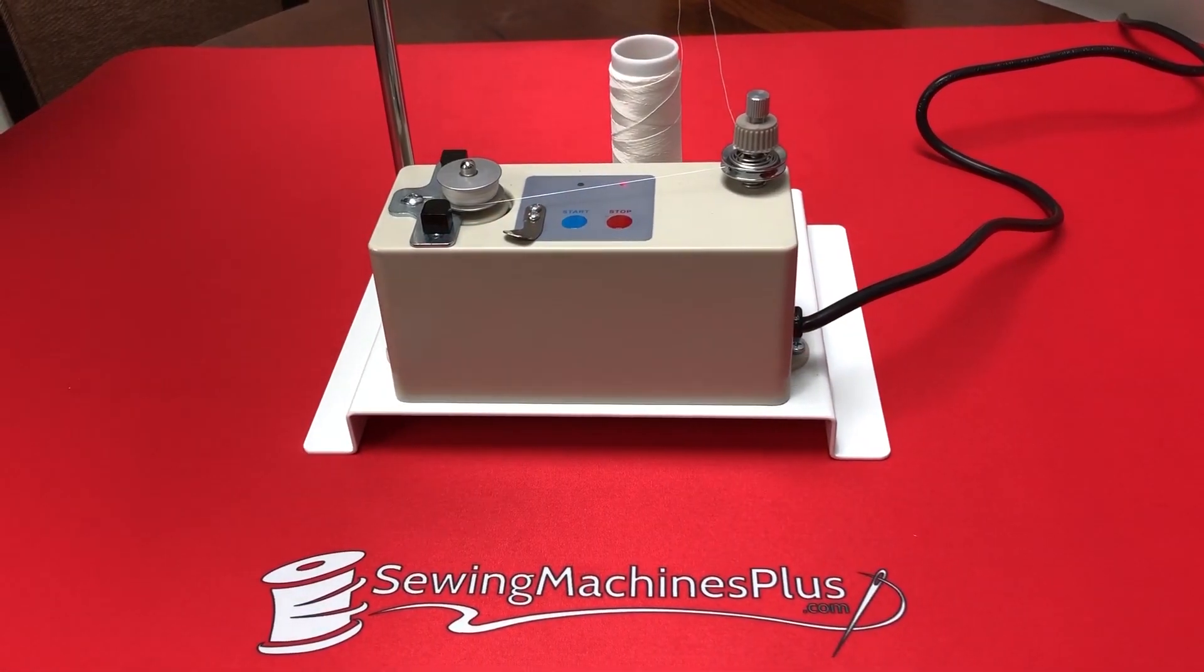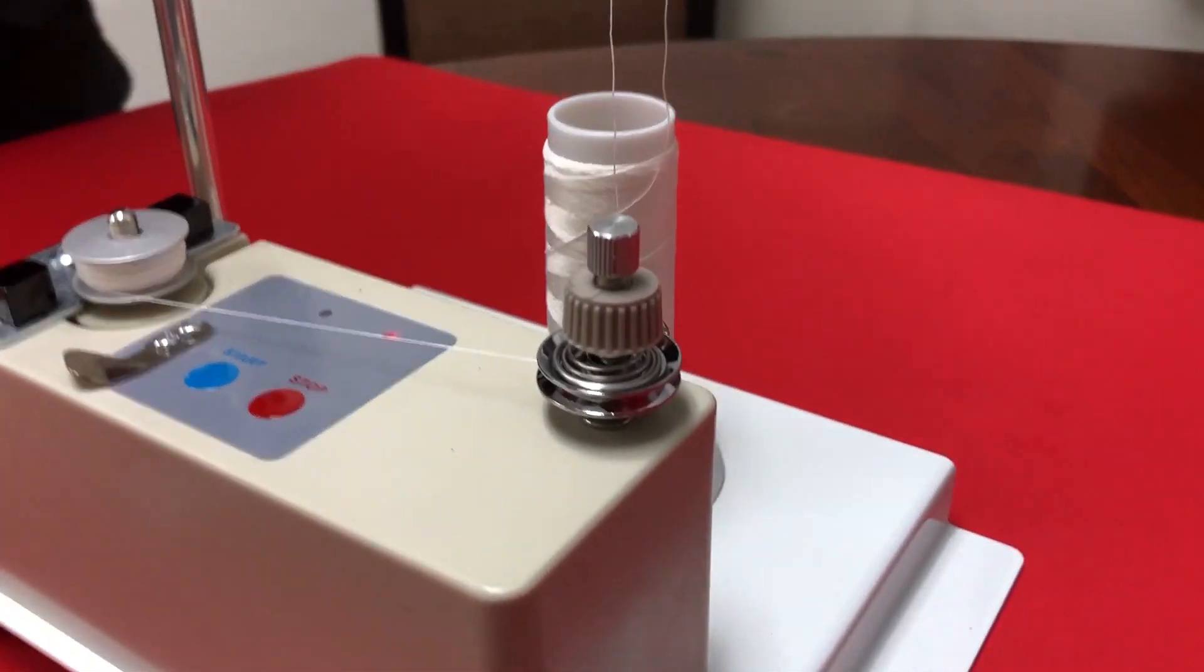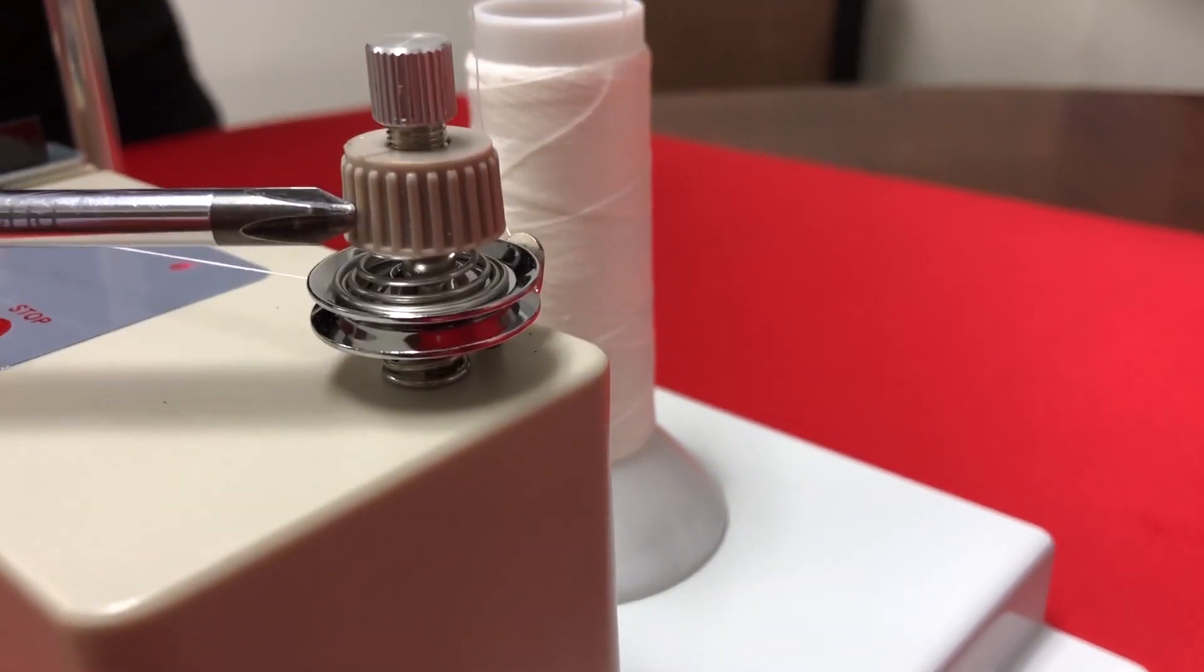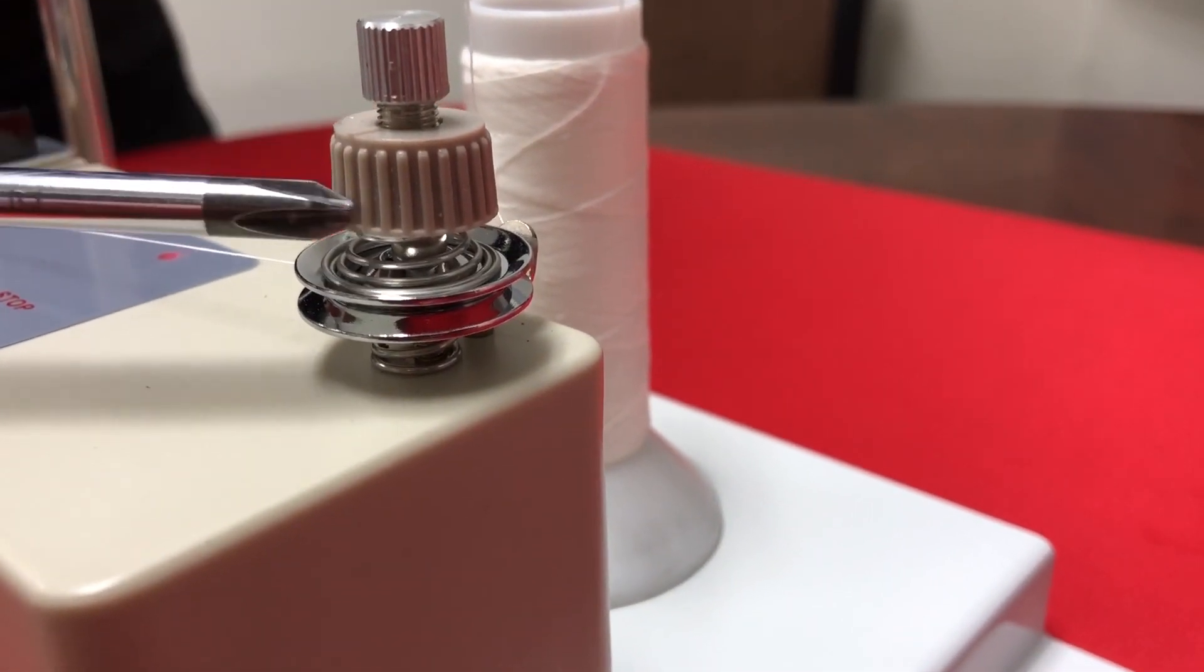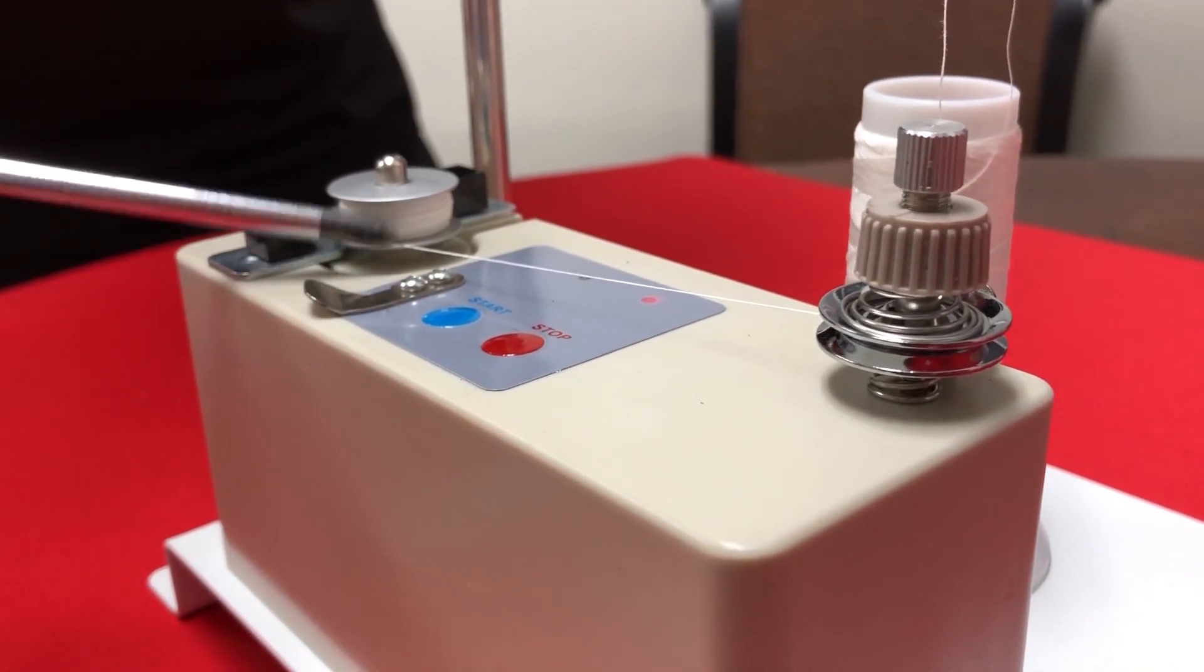Now, in the case that your bobbin didn't wind perfectly, there are three adjustments so that you do get that perfect wind. The first being the tension. That's the plastic knob you see here. That will control how tightly the thread is wound on the bobbin.